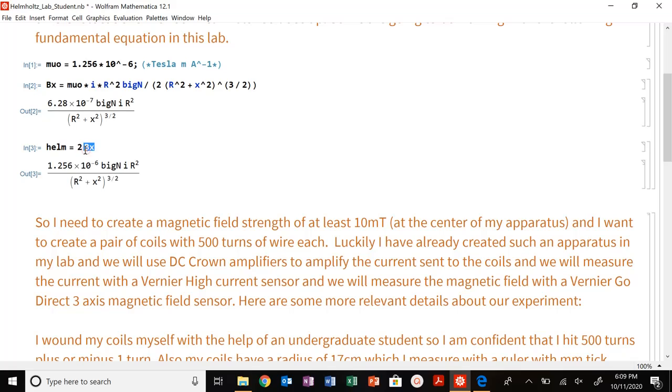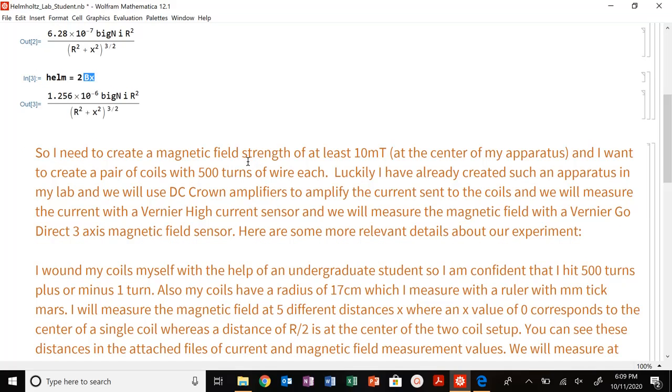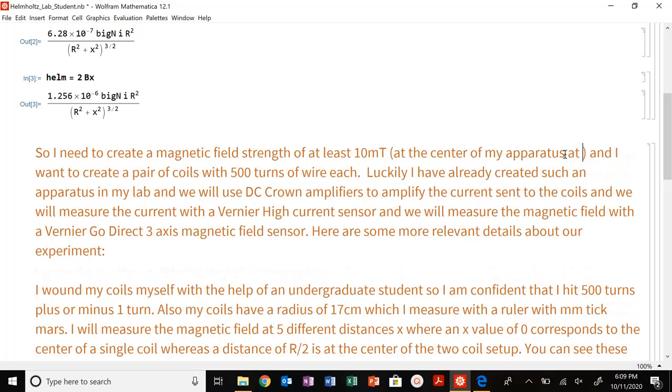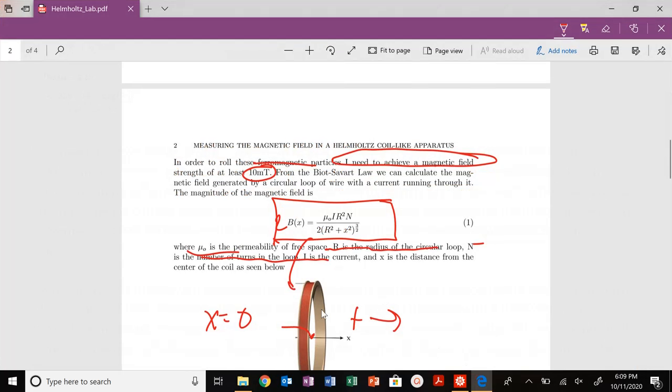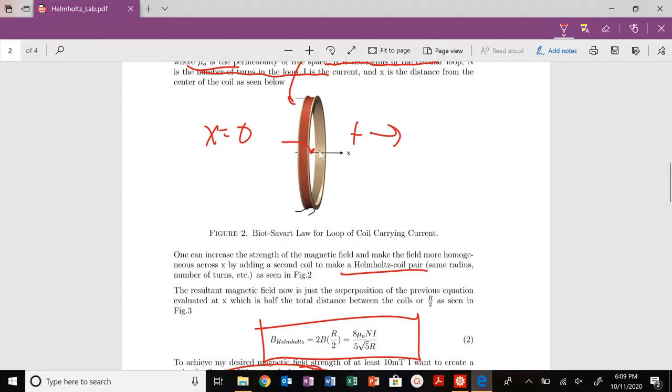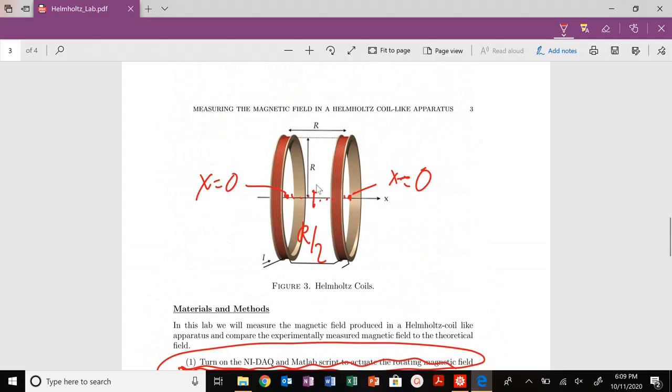Helm, which is going to be two times B sub X, because we have our two coils. So I need to create a magnetic field strength of at least 10 milliteslas at the center of my apparatus. So this means at an X value of R divided by two.